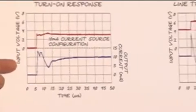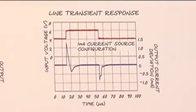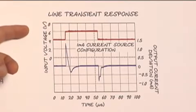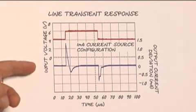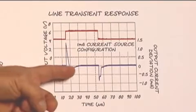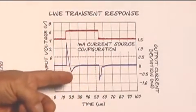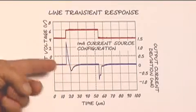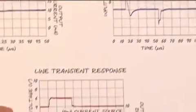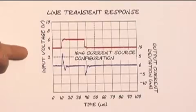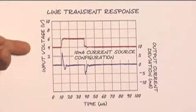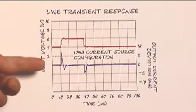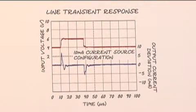Then we'll look at the line transient response, how the device changes with a line transient. And here we have a 1 milliamp current source, and we can see that as the line changes we have steps in our output current, but they settle back very quickly. The last graph is what the transient response looks like with a 10 milliamp current source. Again, we have some transients that settle very quickly.